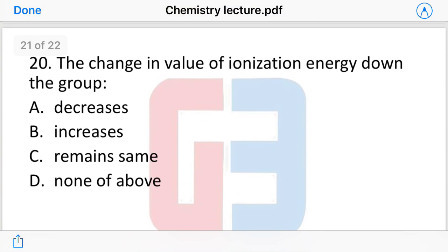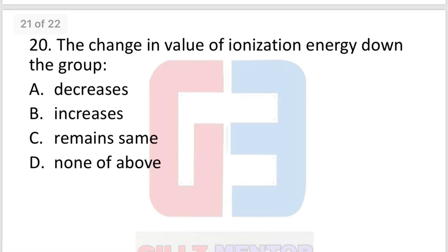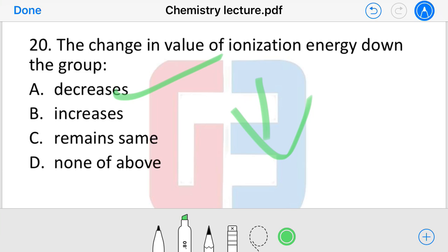Last question: what is the change in ionization energy going down the group? Does it decrease, increase, or remain the same? The answer is that ionization energy decreases going down the group.